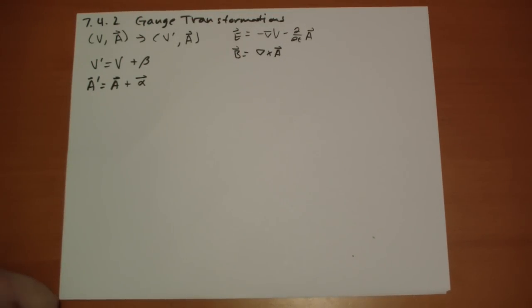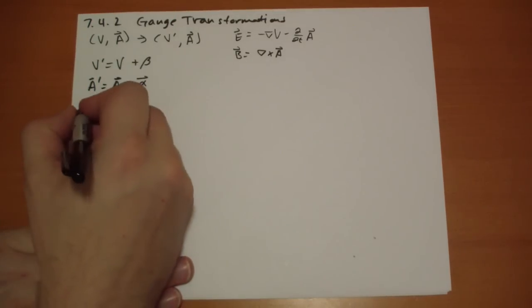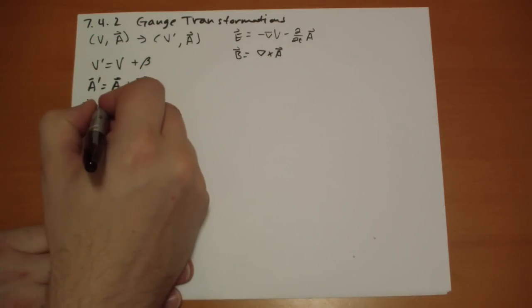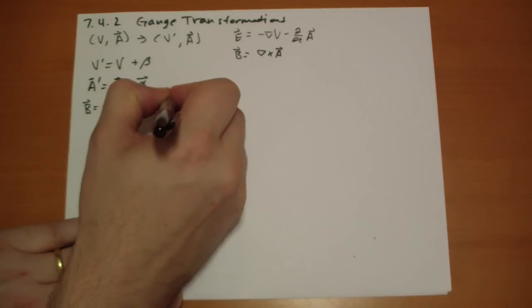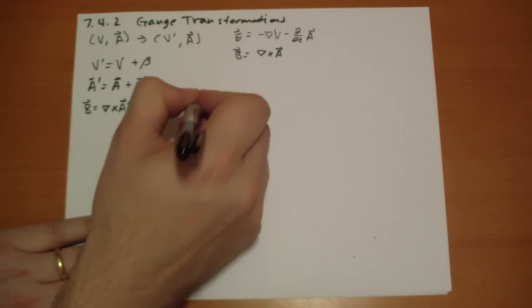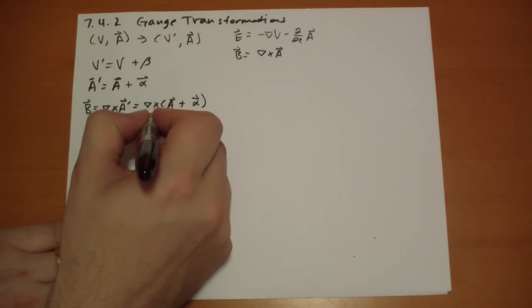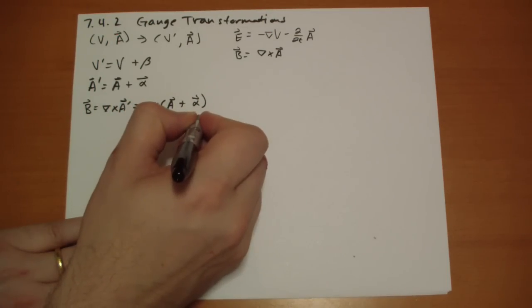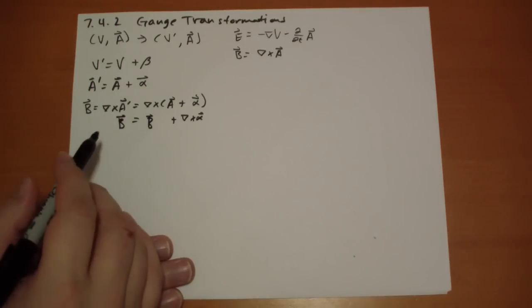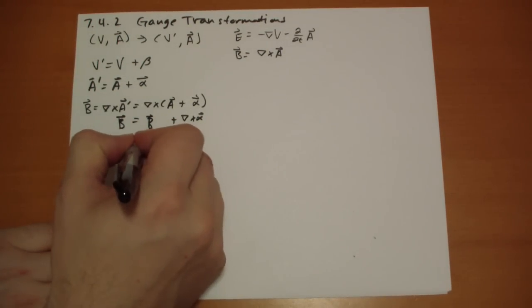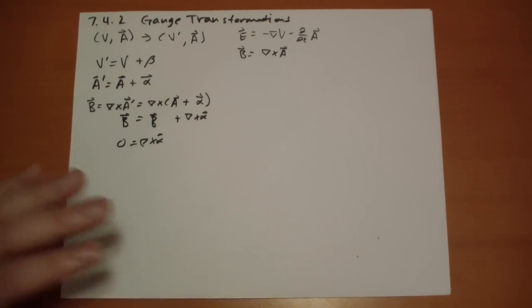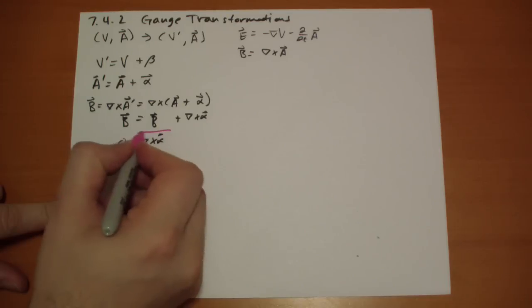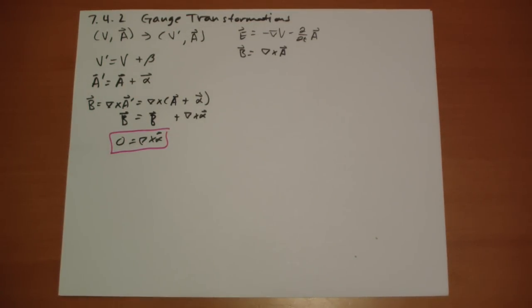If we plug this into B, we find that the B vector of A prime is going to be the curl of A prime, which is the curl of A plus alpha. Well, what's the curl of A? That's just the B field that we found originally, plus this curl of alpha. So by process of elimination, we find that zero, the curl of alpha must be zero. Let's box that. That's kind of an important result. This is not unlike what we found for the A vector in magnetostatics. The curl of whatever thing we wanted to add to that vector field had to be zero.